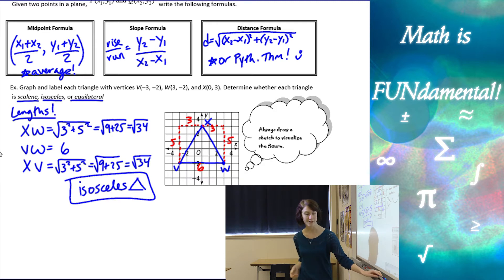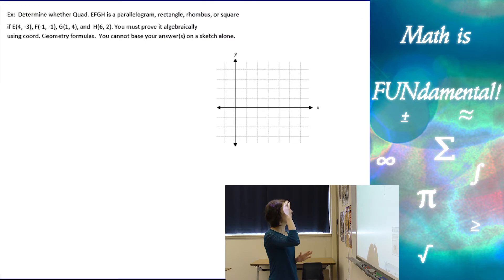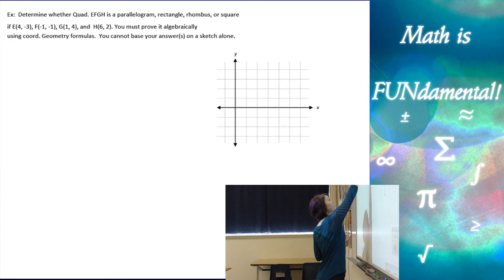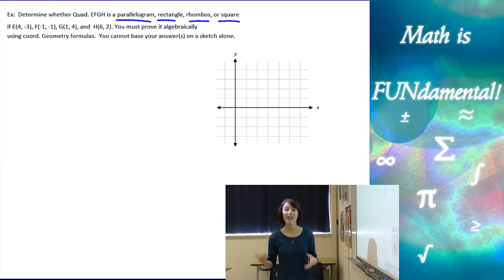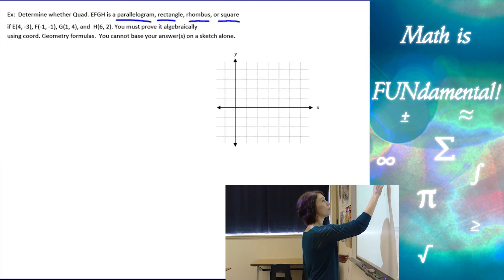Alright, so there's our first example. Now this one's going to get a little more complicated because we have a quadrilateral instead of a triangle. And I want to figure out if it's a parallelogram, rectangle, rhombus, or square. So I have a lot of stuff to think about here. First, let's just start by graphing our points. So we have, if e is at 4, 1, 2, 3, 3, 4, and negative 3. Here's my e.